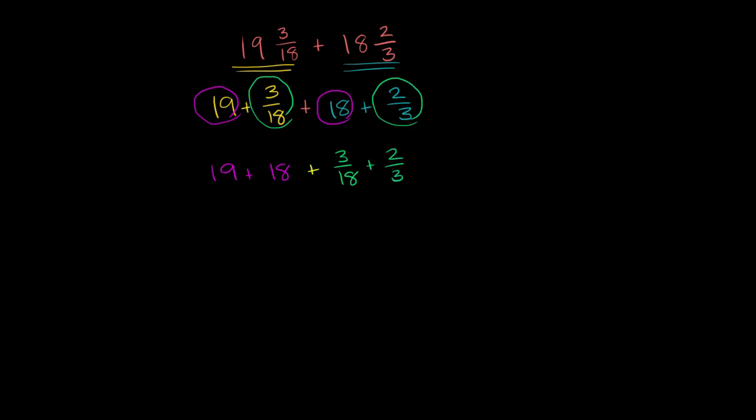Now 19 plus 18, pretty straightforward. That is what? Let's see, 19 plus 19 would be 38, so it's going to be one less than that. It's going to be 37.